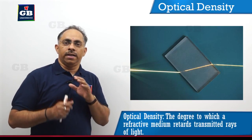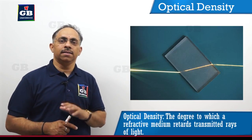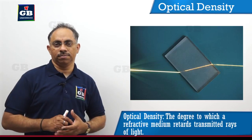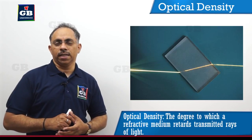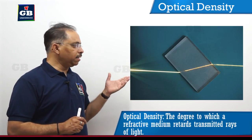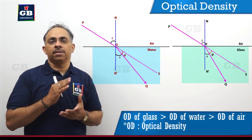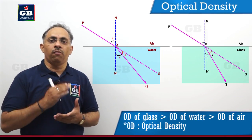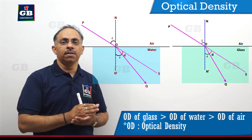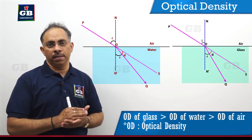Different optical densities of different media will give us different angles of refraction. So this is about refraction at a plane surface. Now, if you talk about why the light ray bends when it is traveling from one optical density medium to another optical denser medium.